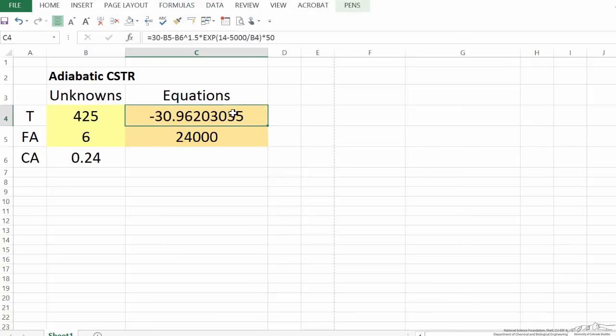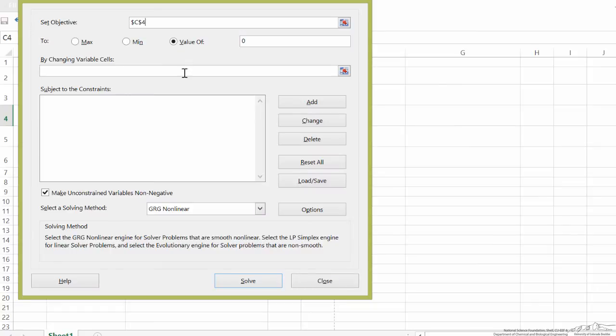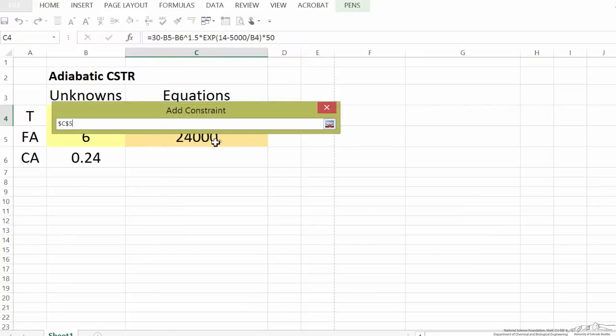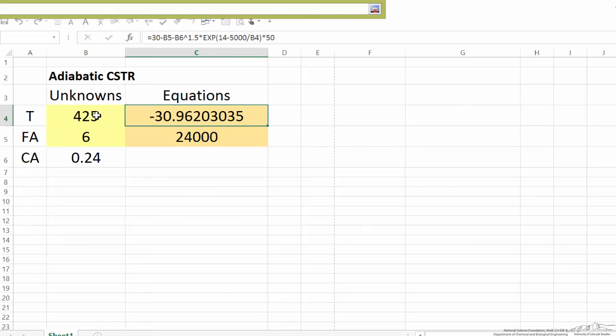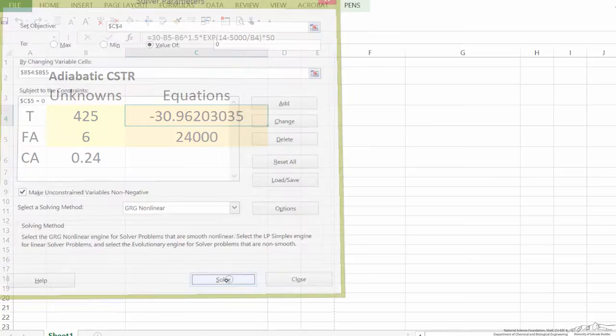And so to do that, what I'm going to do is go into data and into solver, and I'm going to adjust this cell, hit return, and I want it equal to zero. Now I'm going to add a constraint, and the constraint is that this cell is also equal to zero. And what I'm going to do is indicate the two cells I'm going to change, which are these two. So everything should be set. I hit solver.